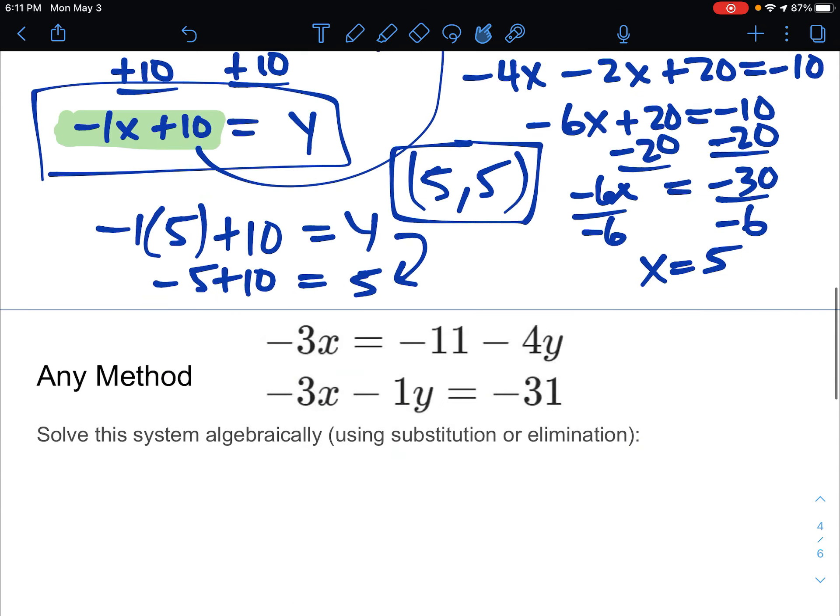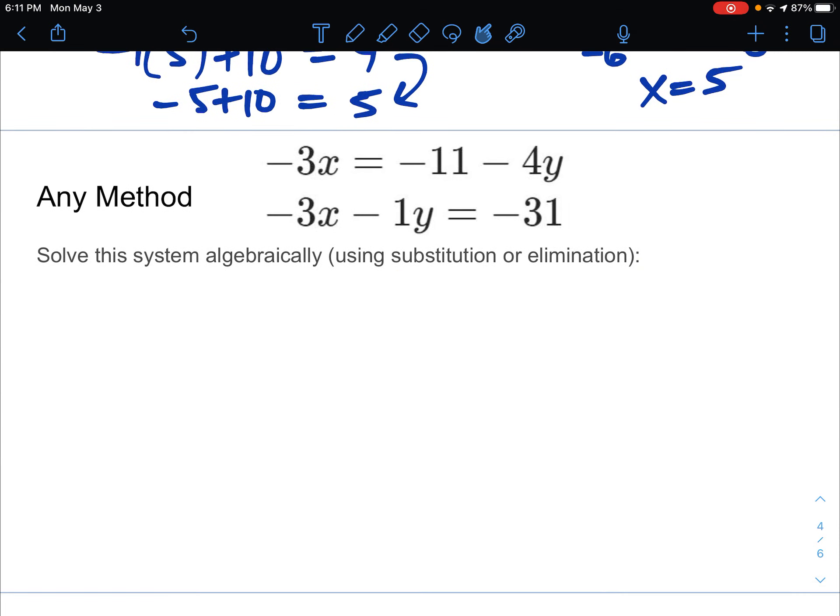So if I pick substitution for this one, let's use elimination for the next one. So similarly, the first equation is not lined up for elimination, and it's not good for substitution yet either. I'm going to move some things around in order to get it in a way that looks like the bottom one. X's, y's, equals numbers.